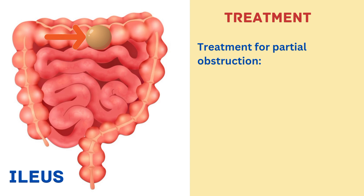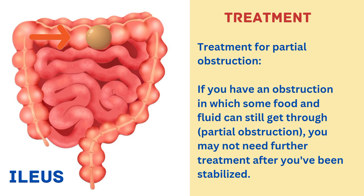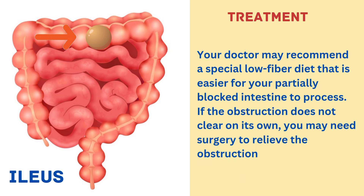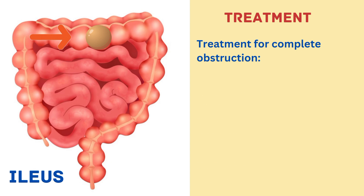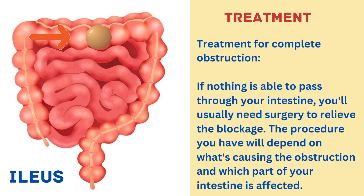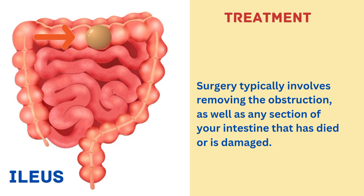For treatment of partial obstruction, if some food and fluid can still get through, you may not need further treatment after being stabilized. Your doctor may recommend a special low-fiber diet that is easier for your partially blocked intestine to process. If the obstruction does not clear on its own, you may need surgery. For a complete obstruction, if nothing can pass through your intestine, surgery is usually required to relieve the blockage, typically involving removing the obstruction and any section of intestine that has died or is damaged.